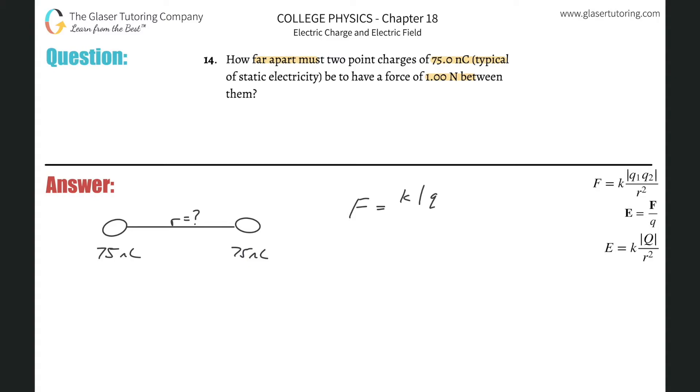Take the absolute value of q1 and q2, and then divide it by the distance between them squared. We talked about this formula a little more in detail in number 10, so you might want to check that out.